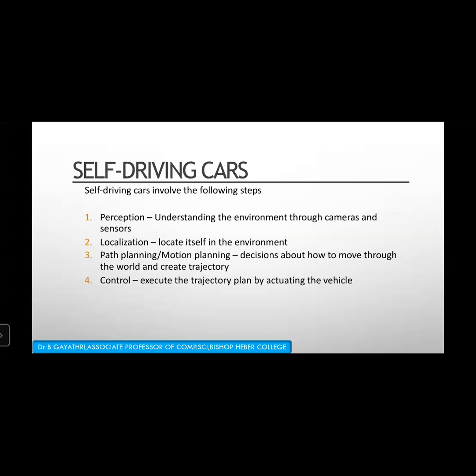Step 2 is localization — we have to locate the car or ourselves in the environment. Once perception is completed, we will be able to locate ourselves. Step 3 is path planning or motion planning. After perceiving the environment and localizing ourselves, we will be able to plan decisions about how to move through the world and create a trajectory.